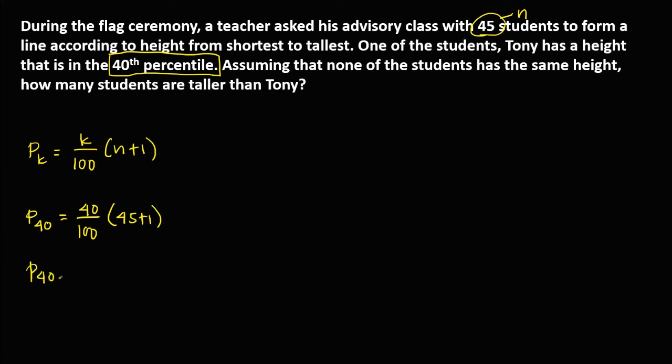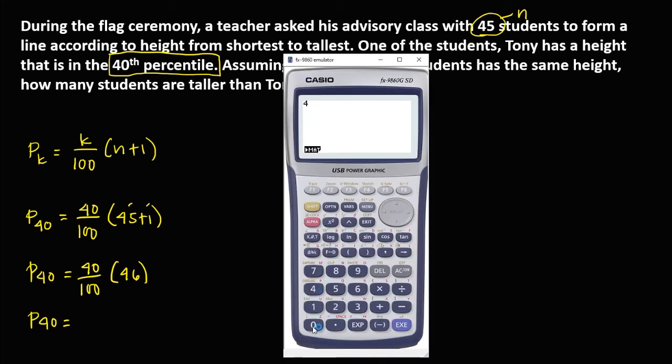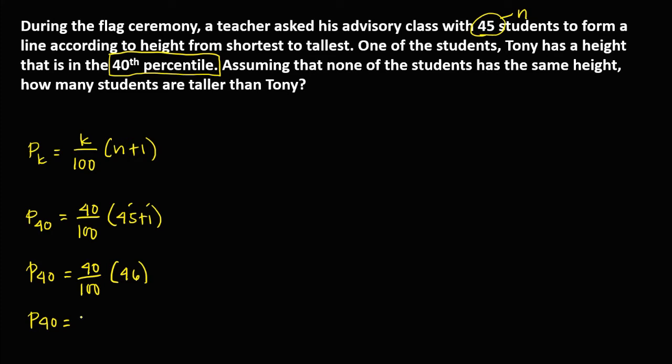To solve for P40, this is 40 divided by 100. 45 plus 1, that's 46. So the position now of P40, we have 40 divided by 100 times 46. We get 18.4, so round off, approximate to 18. This 18 is the position of Tony.